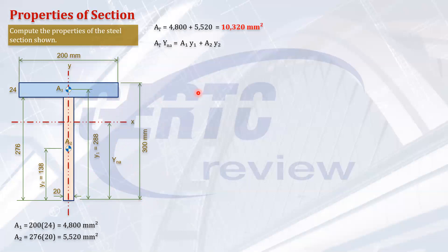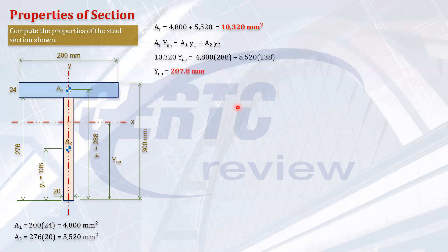The moment of the total area at the bottom equals the sum of moments of Area 1 and Area 2 at the same reference point. Substituting the values we computed, ȳ_NA comes out to 207.8 mm from the bottom of the section.